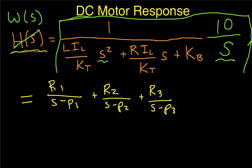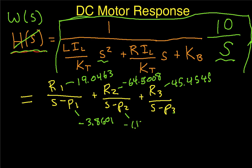And we have that MATLAB has computed the following values for us. I'll just write them down here. Here we have 19.0463 minus 64.5008 and 45.4545. P1 is minus 3.8601, P2 is minus 1.1399, and P3 is 0.